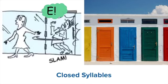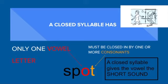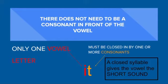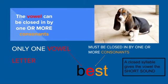Last week we worked on closed syllables — slamming that door on your vowels so they're all short. A closed syllable has only one vowel letter closed in by one or more consonants, and the vowel will be the short sound. There doesn't need to be consonants in front of the vowel — you just need one vowel letter closed in by one or more consonants. For example, in 'best,' the vowel is closed in by two consonants.